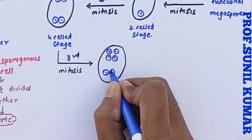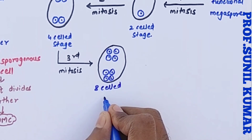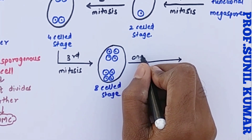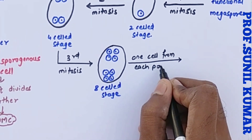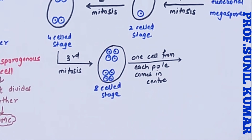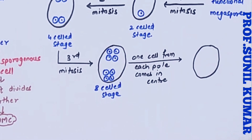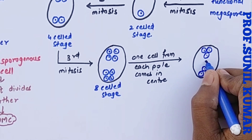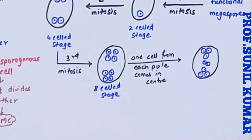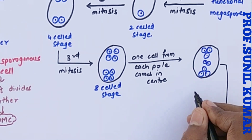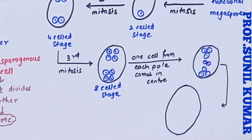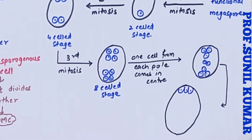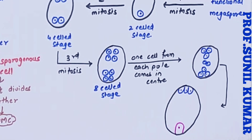Now the most important step of megasporogenesis takes place. Since there are four cells at each pole, one cell from each pole migrates towards the center. When they come to the center, only the cytoplasm fuses — not the nucleus. This step is unique to angiosperms and does not happen in gymnosperms. The three cells remaining upward then develop into specialized cells called antipodal cells.